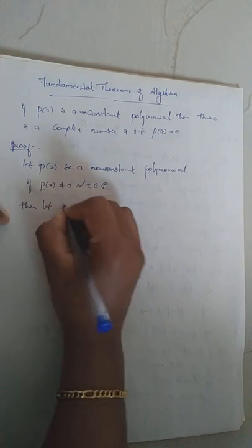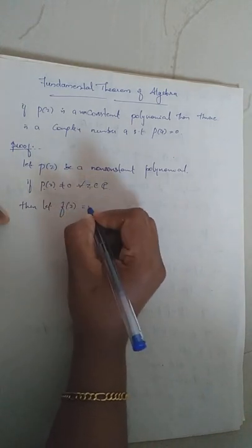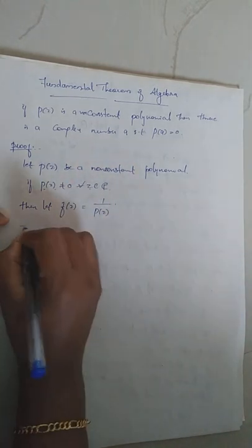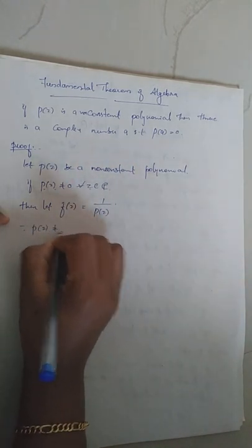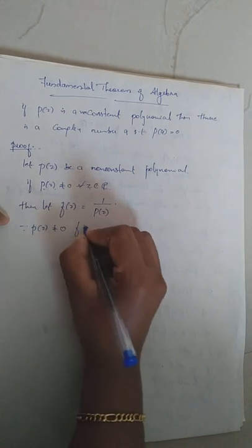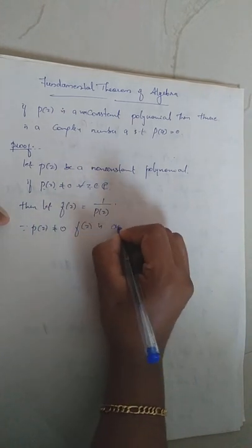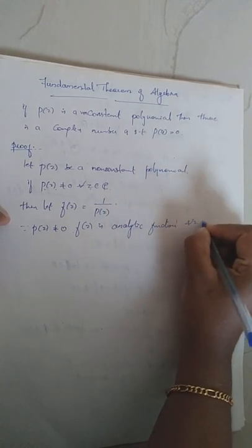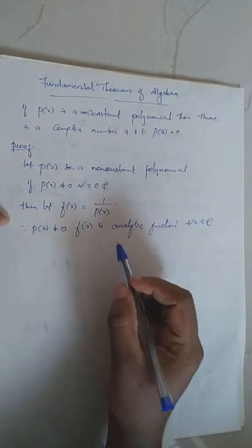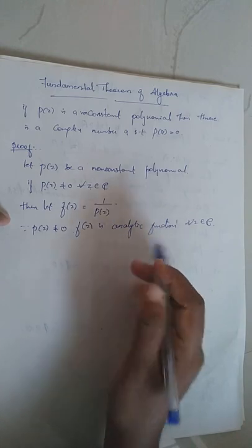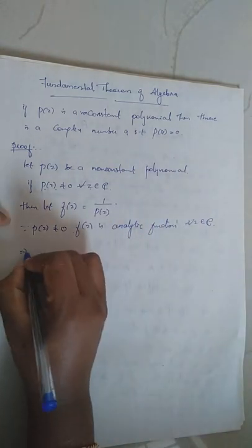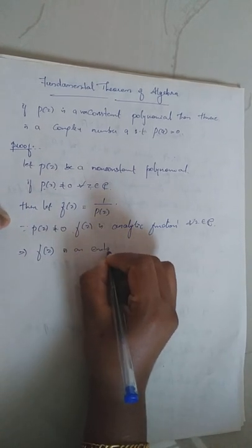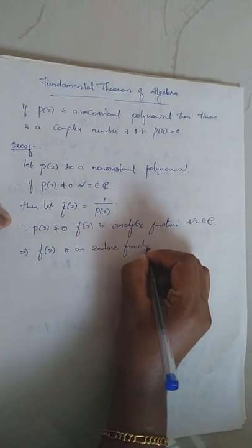Then define a new function F(z) = 1/P(z). Since P(z) has no zeros, F(z) is well-defined and analytic for every Z in C. When a function is analytic at every point of C, that is called an entire function. So F(z) is an entire function.